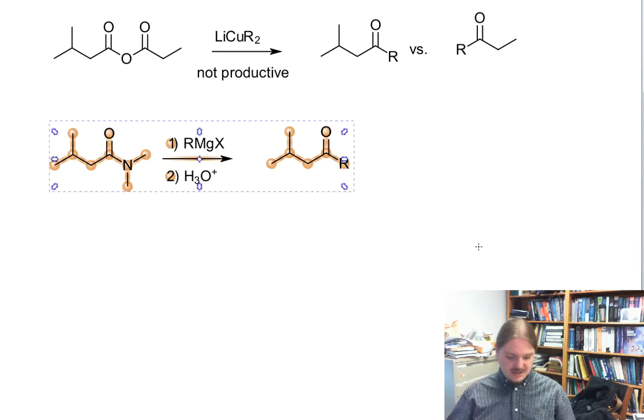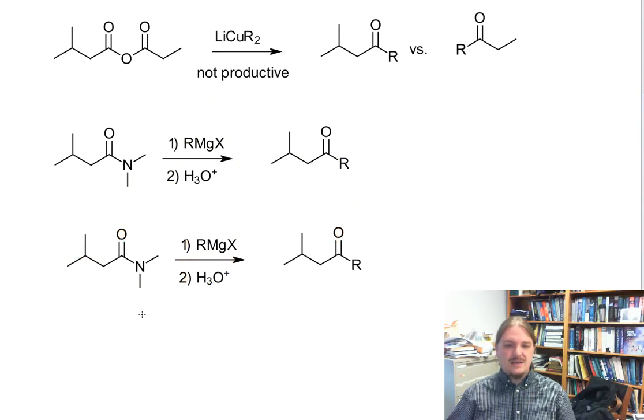And likewise, you can get a ketone out of the reaction with a nitrile as well using a Grignard reagent.